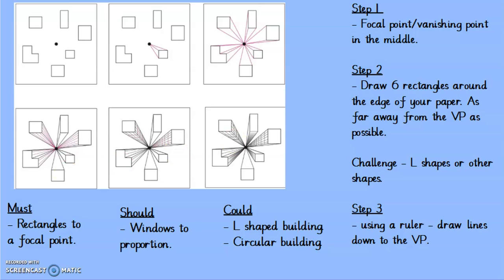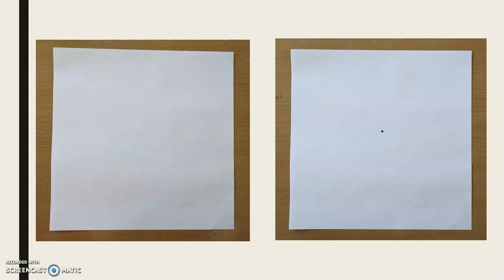So let's start with our first step. I've got my square piece of paper and I've drawn a dot in the middle using a whiteboard pen, but I would advise you to use your pencil so you can make a dot and then erase it afterwards. Make it not huge, but big enough so that you can see it. That is your focal point there in the middle of your paper.